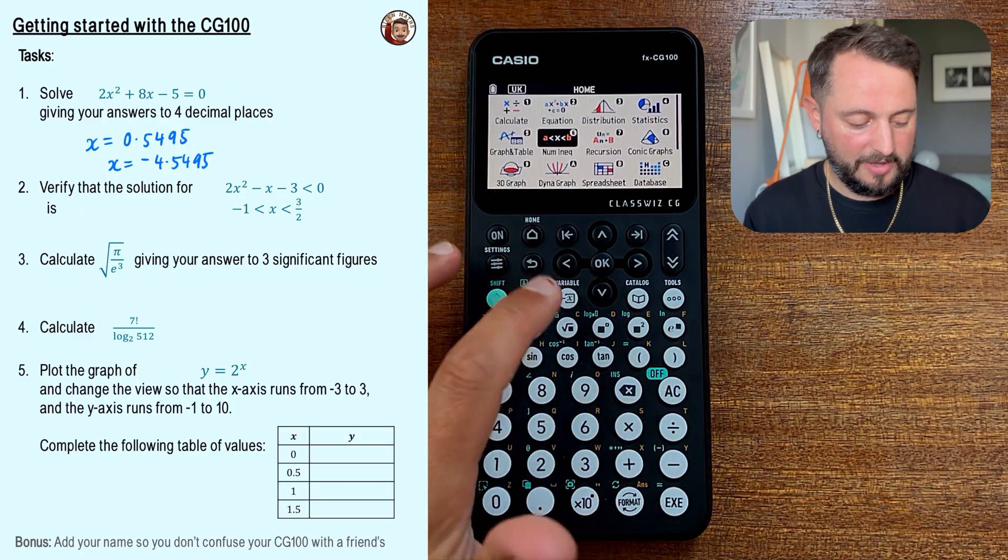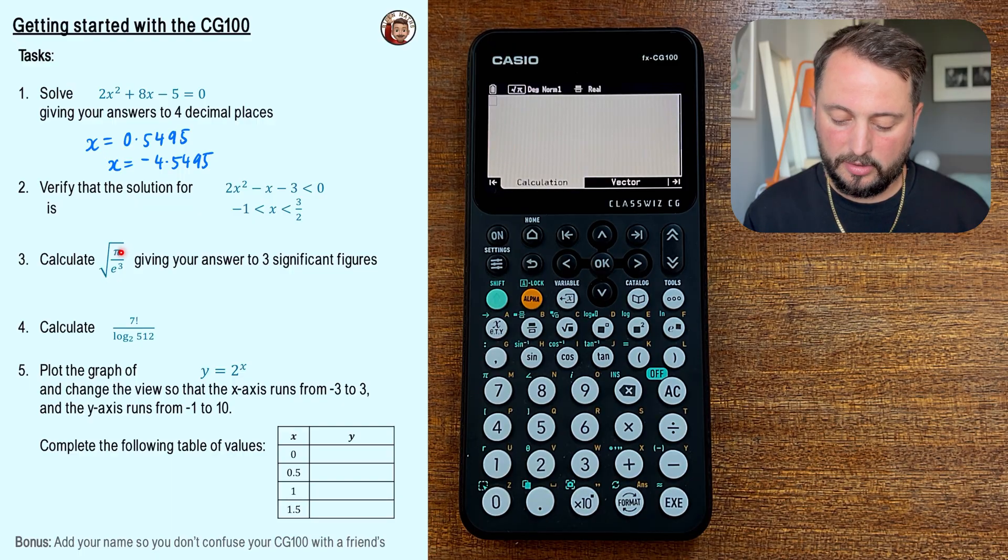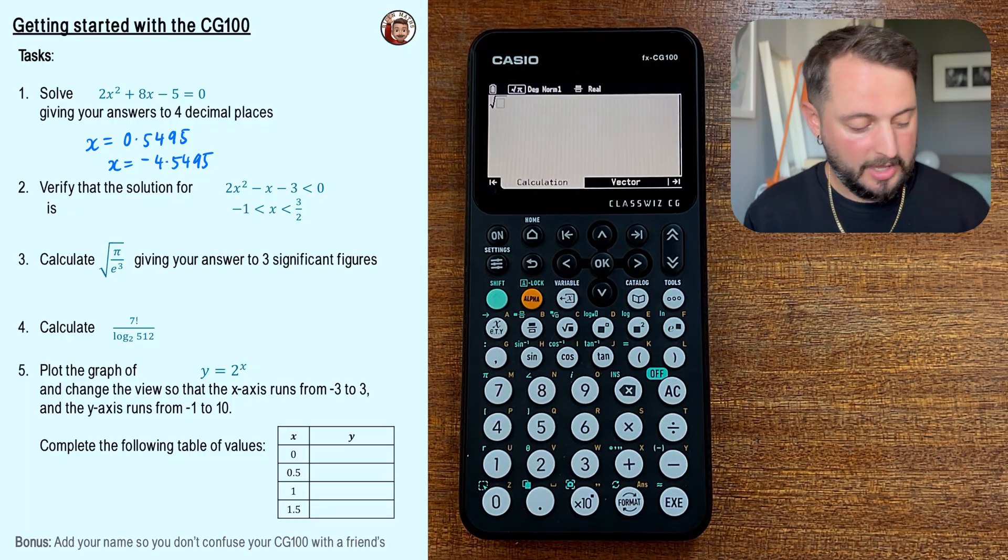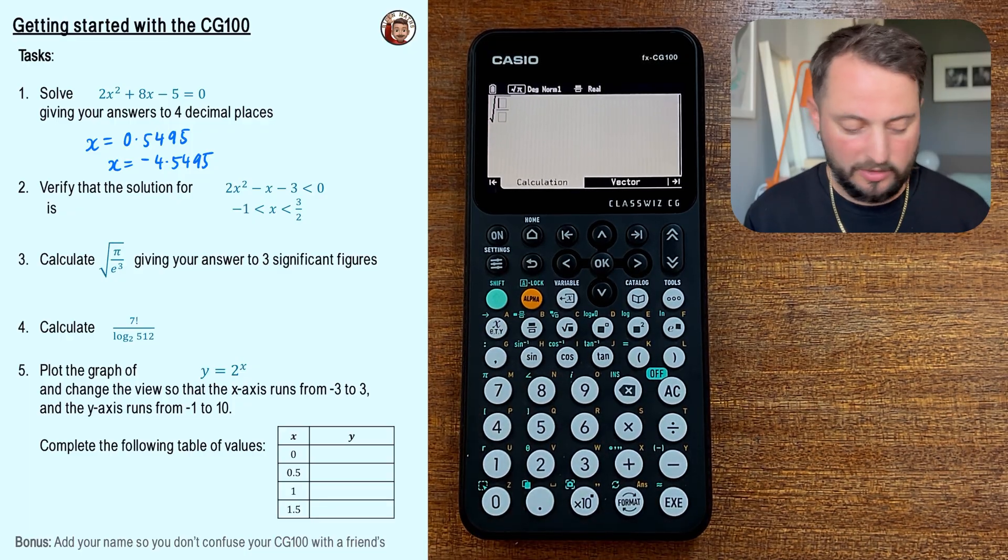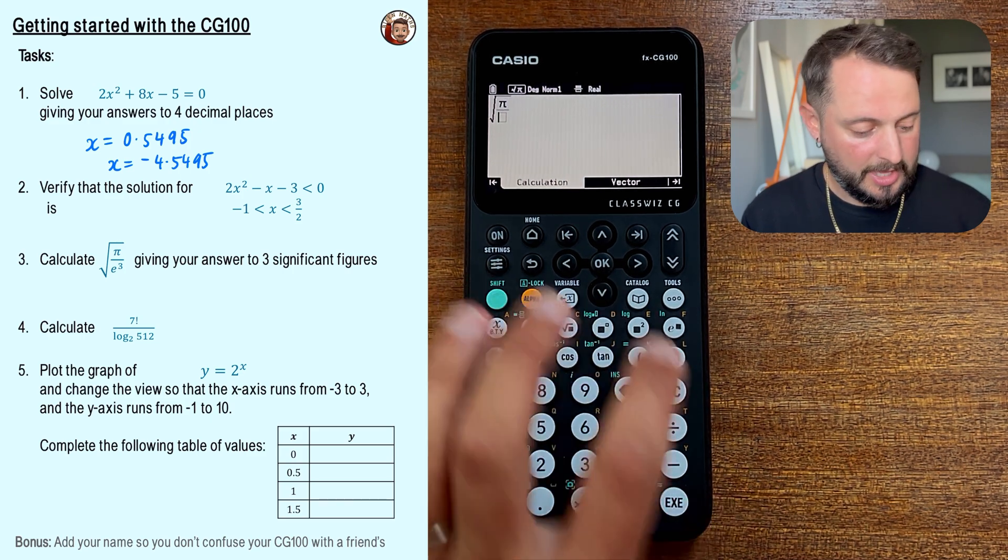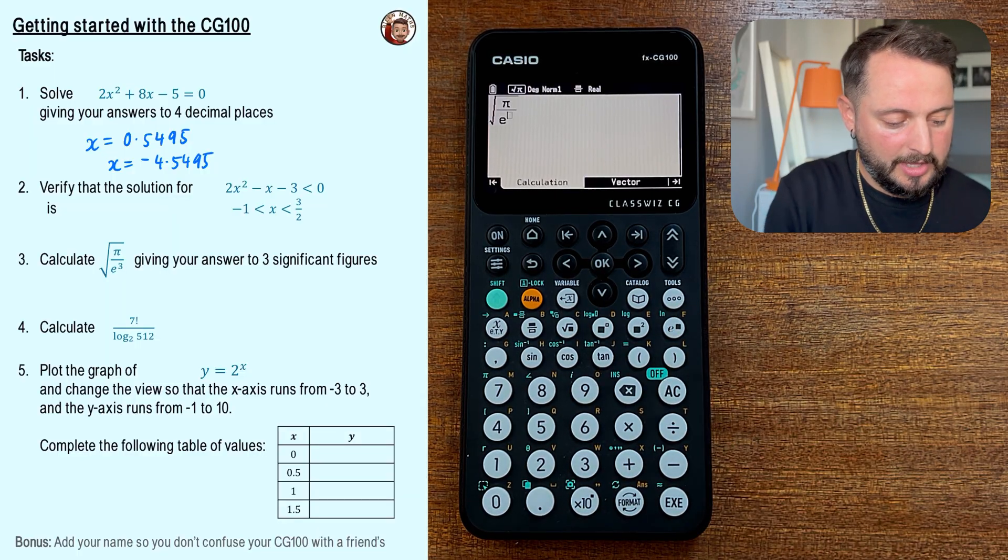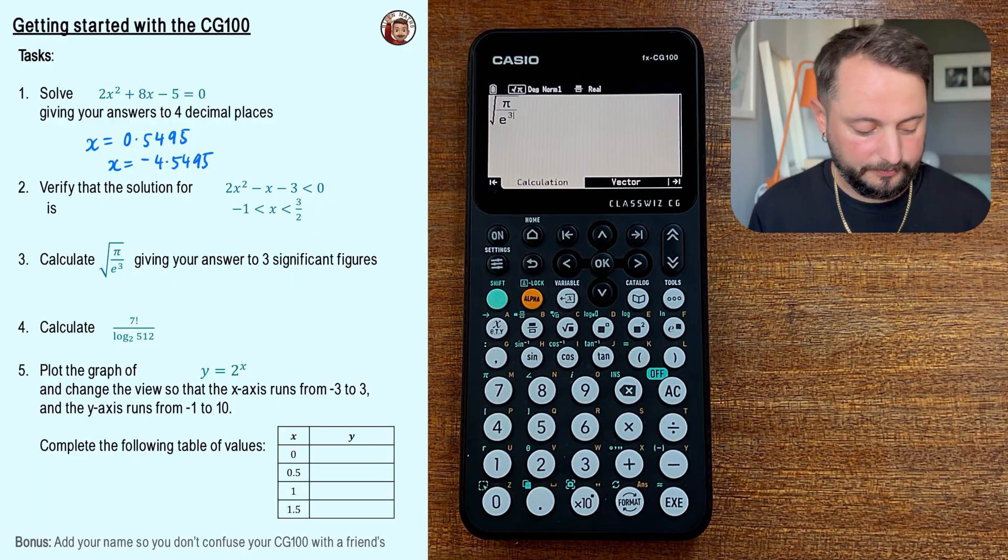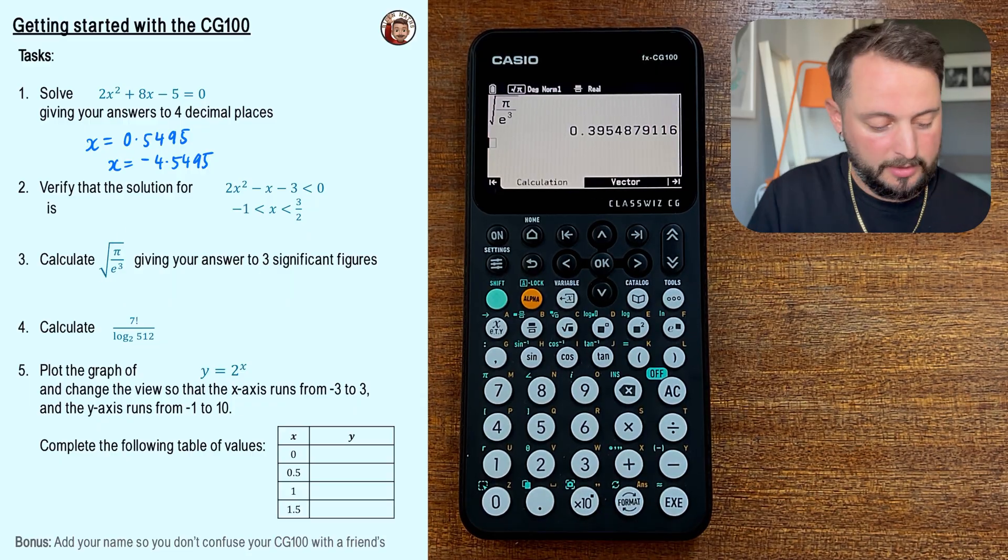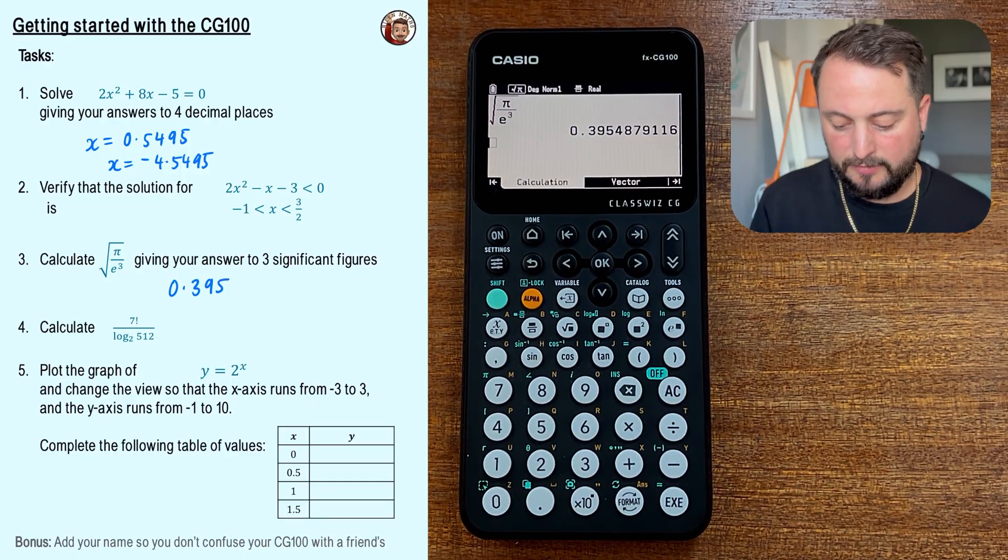Okay, number three, calculate. Probably feels like we're going to menu number one for calculate. I'm going to try and just type this in. So it's the square root of pi over e cubed. We've now got a dedicated square root button, which we didn't have with the CG50. And I'm going to put in a fraction button, which I'm sure you're familiar with. I'm going to put pi on the top. Remember I said you press shift and then seven to get that pi. E is the Euler's number or the kind of to do with exponentials. You'll notice it has its own button over here. And I'm going to put in that it's to the power of three. I'll hit execute. And we can't actually change the format of this because it's already in its exact form here. But because we want it to three significant figures, I'm just going to write that this is 0.395 to three significant figures.